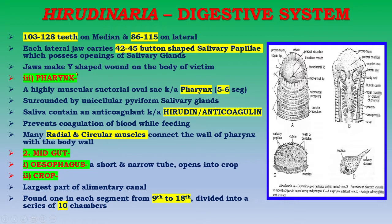The third part of the stomodium is the pharynx, which is a highly muscular, oval sac found in segments five to six. It is surrounded by unicellular pyriform salivary glands. The saliva of Hirudinaria contains an anticoagulant known as hirudine, which prevents coagulation of blood while feeding.